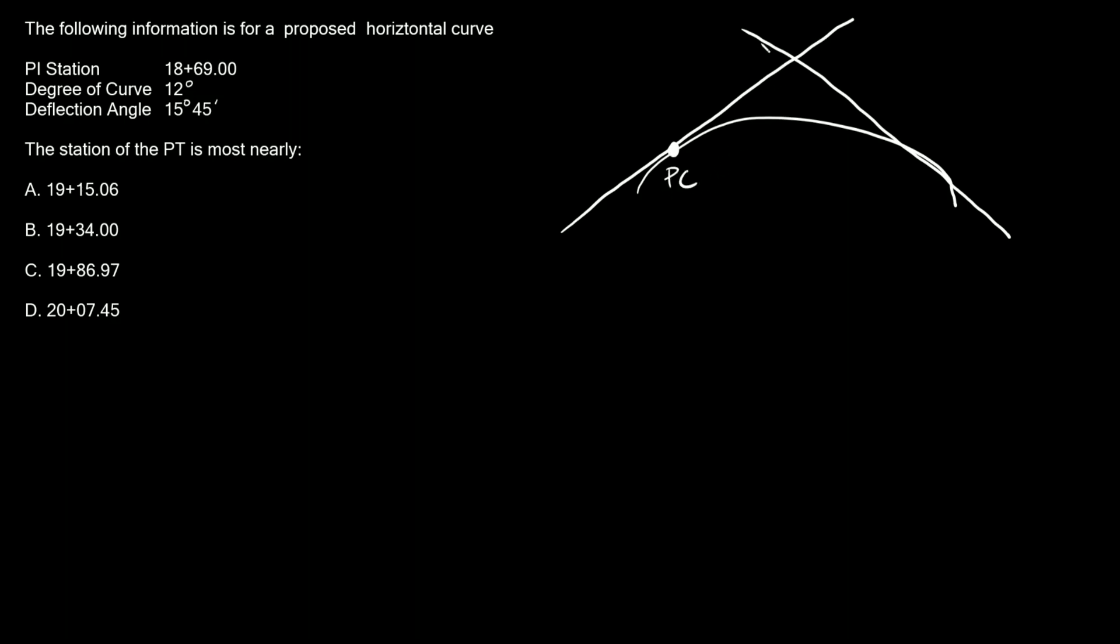Where these two tangent lines intersect, this is the PI, and then the end of the curve where it touches the tangent, that's not drawn super cleanly, but this point over here is the PT, the point of tangency. So we're trying to find the station for the PT.